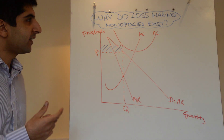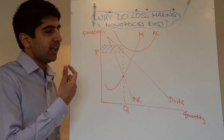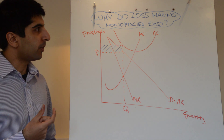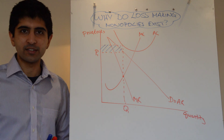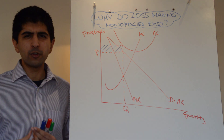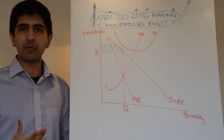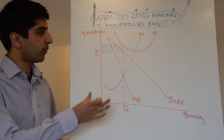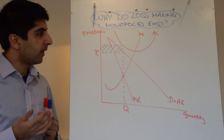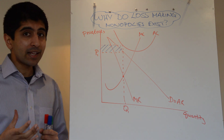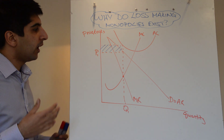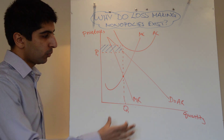Something quite interesting to consider is why do some monopolies make losses? Why do these firms exist? It's odd because when we draw normal monopoly diagrams, we always assume that there are supernormal profits being made. But you can get some monopolies that make losses. On a diagram, what does that look like?